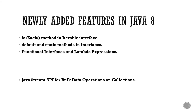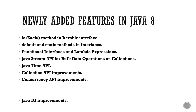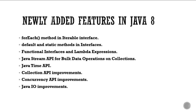Next question: Newly added features in Java 8. These include: forEach method, default and static methods in interfaces, functional interfaces and lambda expressions, Java Stream API for bulk data operations on collections, Java Time API, Collection API improvements, Concurrency API improvements, Java I/O improvements, and changes in memory management.